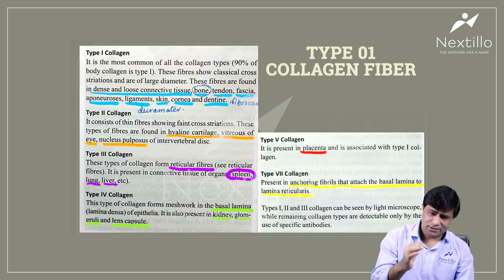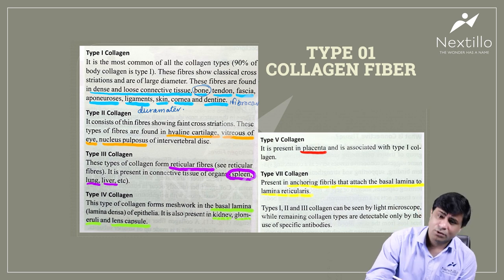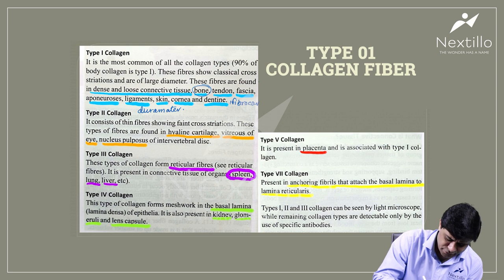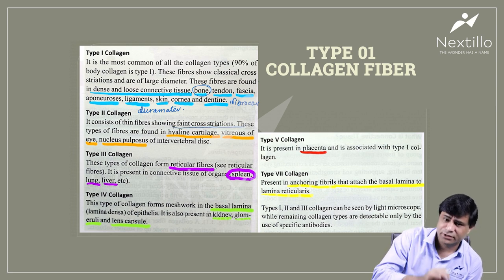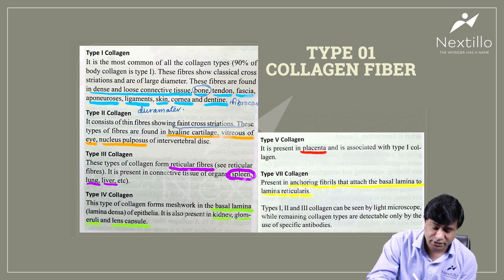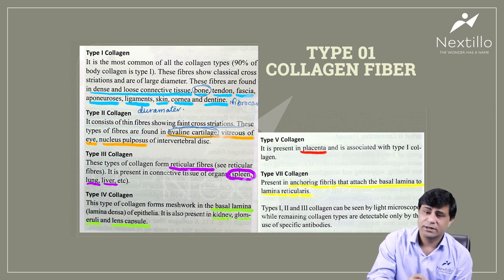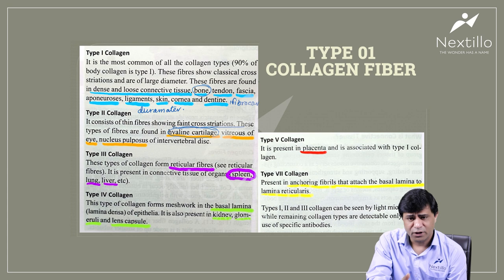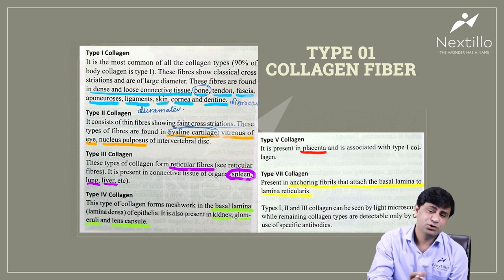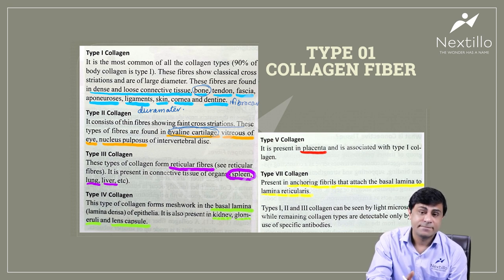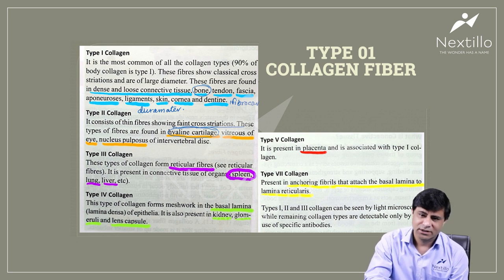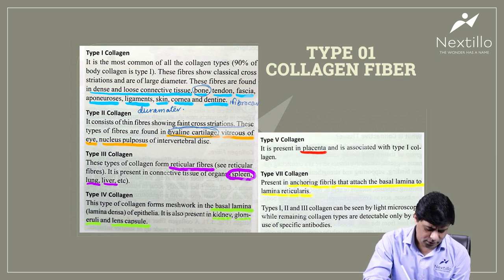Type 2 is a thinner type with faint cross-striations because thickness is reduced. These fibers are present in hyaline cartilage, vitreous of the eye, and the nucleus pulposus of the intervertebral disc — which is a remnant of the notochord. Another remnant of the notochord is the apical ligament of the dens, which reaches into the cranial cavity from the apex of the odontoid process.